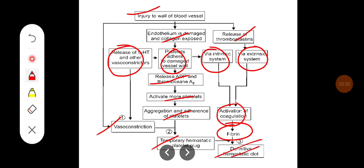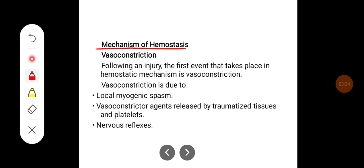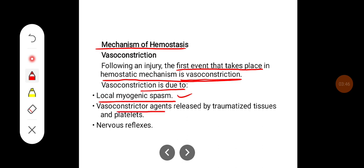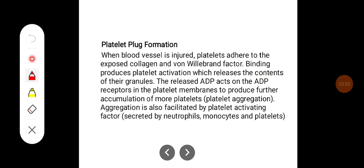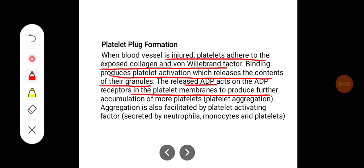Following an injury, the first event in the hemostatic mechanism is vasoconstriction, which occurs due to local myogenic spasm, vasoconstrictor agents released by traumatized tissues and platelets, and nervous reflexes. When a blood vessel is injured, platelets adhere to the exposed collagen; von Willebrand factor binding produces platelet activation, releasing granule contents. The released ADP acts on ADP receptors in platelet membranes to produce further accumulation of platelets — called platelet aggregation — also facilitated by platelet activating factors secreted by neutrophils, monocytes, and platelets.